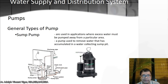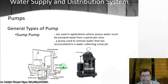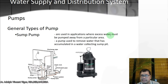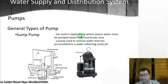Then you have a sump pump. It is used in applications where excess water must be pumped away from a particular area — it's a pump used to remove water that has accumulated in a water-collecting sump. Take note: its application is where there's excess water that should be pumped away from a certain area. For example, in underground car parks that get flooded, or even in basements of residential buildings.